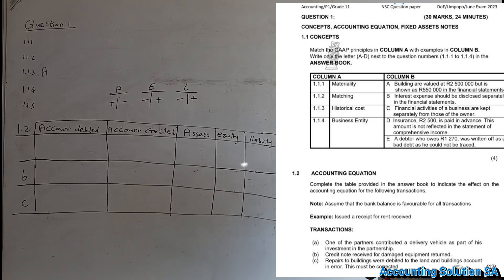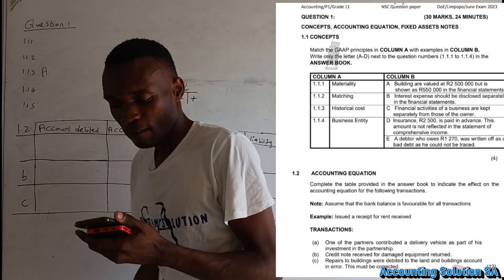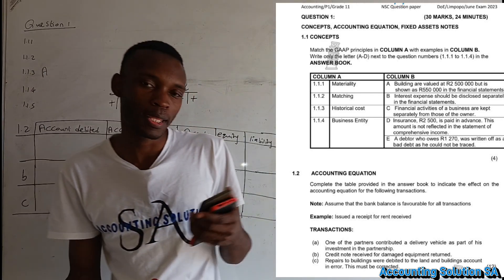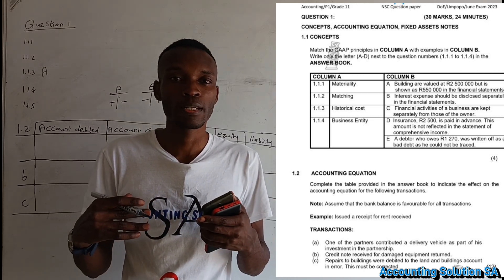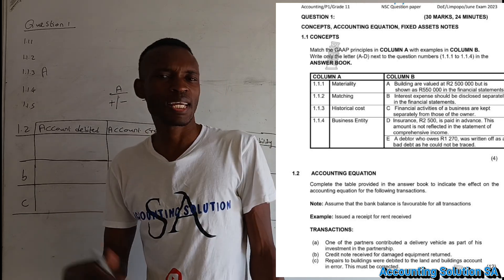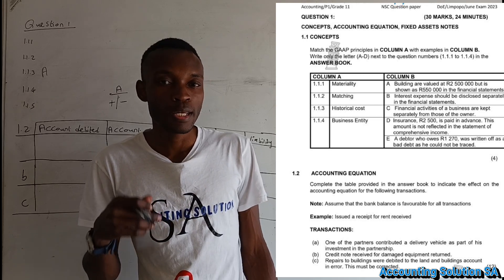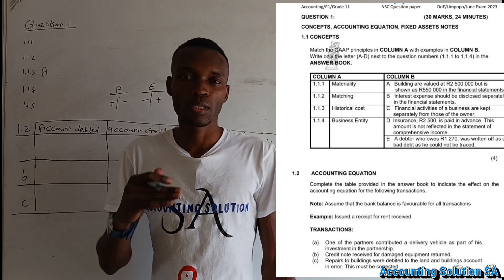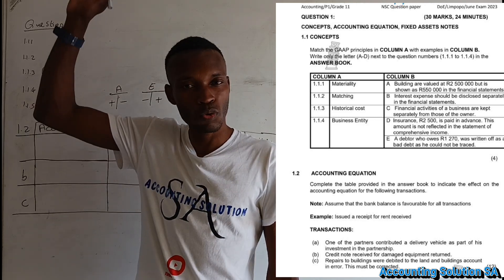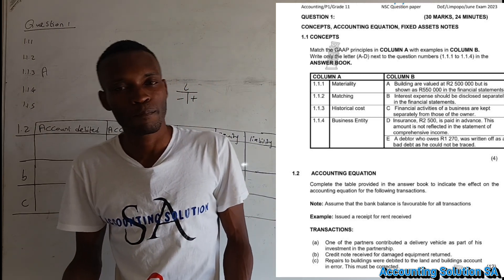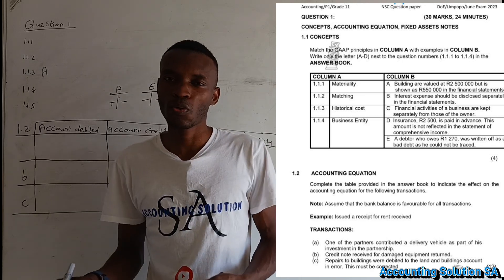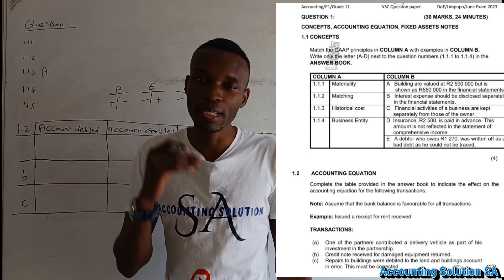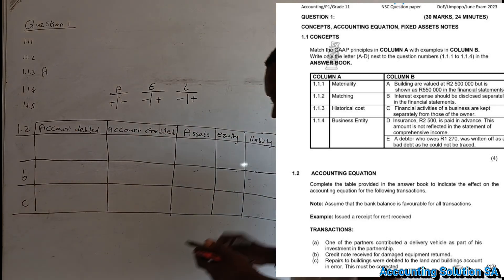Number B says interest expense should be disclosed separately in the financial records, which means number B is going to match with materiality. Interest expense should be disclosed separately in the financial statement because interest expense is not part of other expenses — it is material, meaning it's important. When we say something is not material, it means it's not that important. That's why when we prepare the income statement, we record all other expenses like rent, repairs, and insurance, but we never include interest expense with them because it must be reported separately.